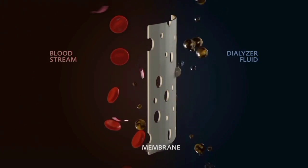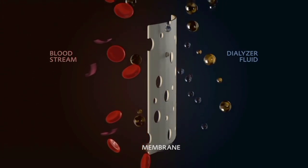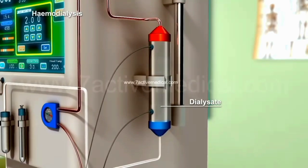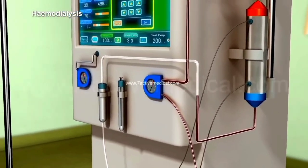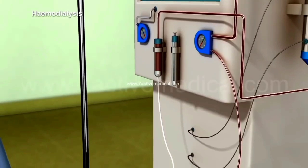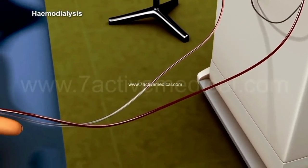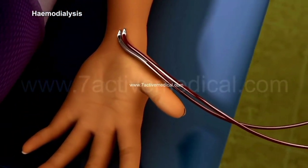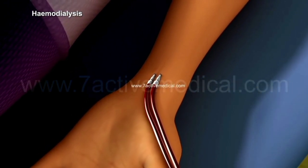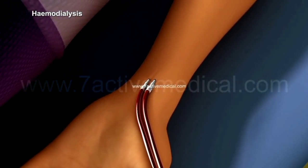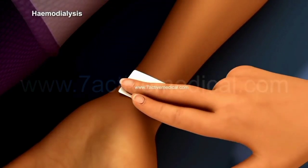As you can see in the video, the waste comes out. The purified blood then enters into the patient through the main vein. Each dialysis session takes at least three to six hours. This is a temporary solution; the permanent solution is kidney transplantation.